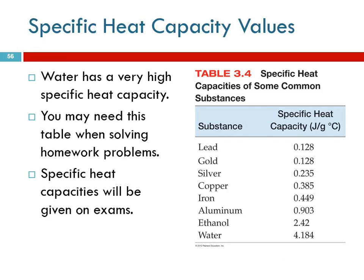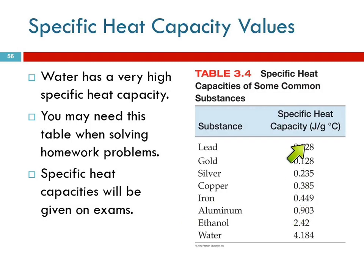Water has a very high specific heat capacity. Looking at this table, which you may need to refer to for homework problems, water has a specific heat capacity of 4.184 joules per gram degree Celsius. Most of the other substances listed are metals and have very low heat capacity — copper is 0.385 joules per gram degree Celsius. It takes much less heat to heat up a gram of copper than a gram of water. If you need specific heat capacities for an exam problem, I'll give them to you — you don't need to memorize these.